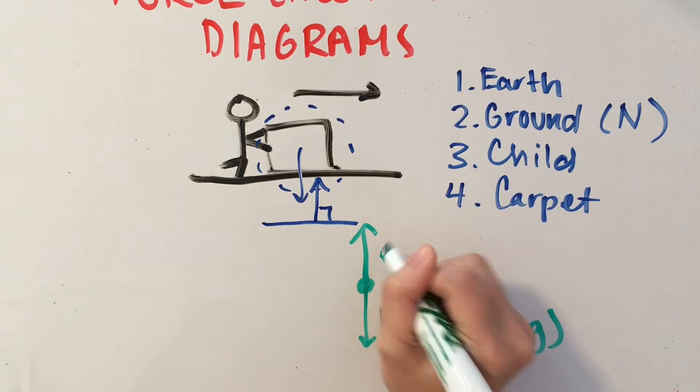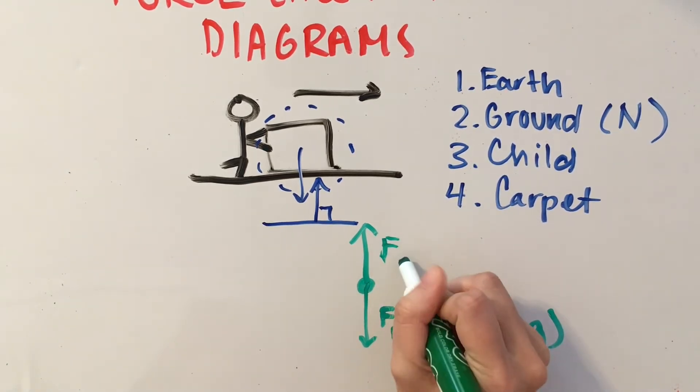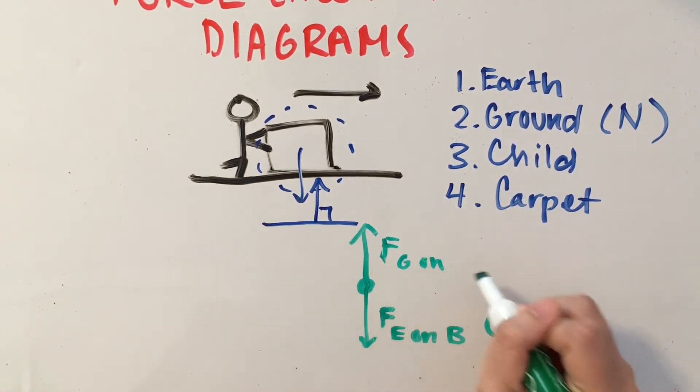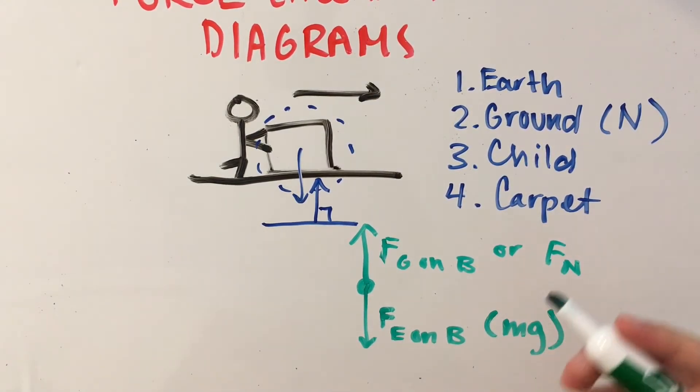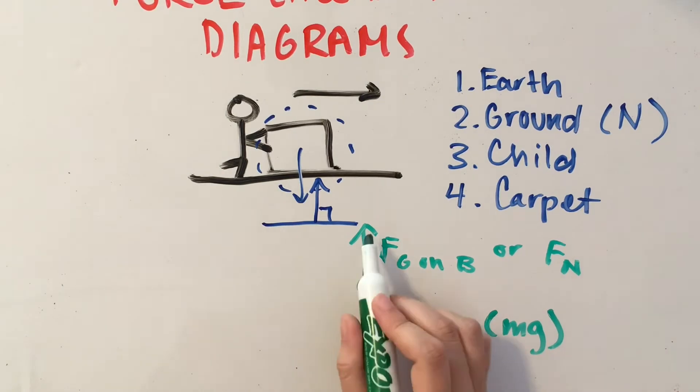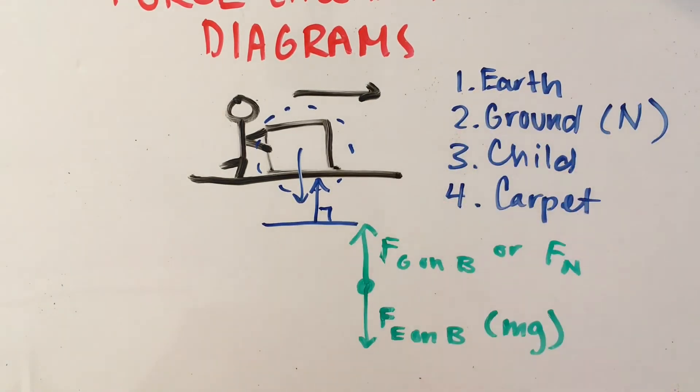We can label this as F ground on box or F normal. Because like we said earlier, this force is going to be the normal force.